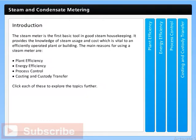The steam meter is the first basic tool in good steam housekeeping. It provides the knowledge of steam usage and cost, which is vital to an efficiently operated plant or building. The main reasons for using a steam meter are plant efficiency, energy efficiency, process control, and costing and custody transfer.